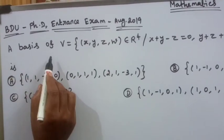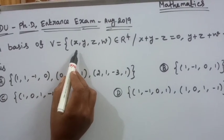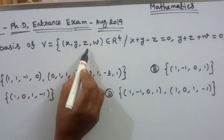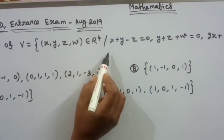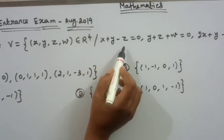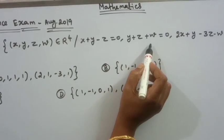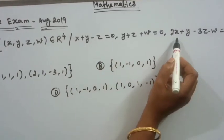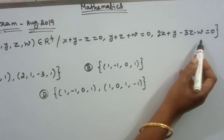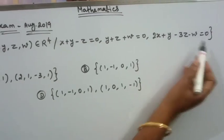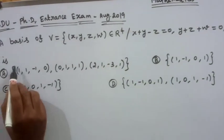A basis of V is equal to the set of all vectors (x, y, z, w) belonging to R4 such that: x + y - z = 0, and y + z + w = 0,